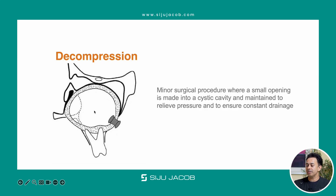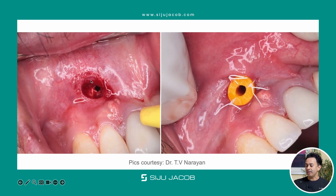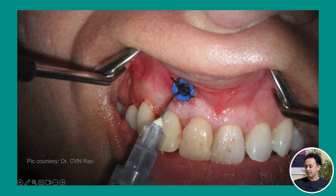Decompression is a much more conservative procedure where a minor surgical opening is made into a cystic cavity and maintained to relieve pressure and ensure constant drainage. You put a small drain which goes into the cystic cavity, and through this drain, whatever contents are there gets drained out over a period of time. Clinically, you can see a small opening made through the soft tissue communicating into the cystic cavity, with a drain sutured to the adjacent soft tissue, and then you irrigate through this opening to drain out the cystic contents.